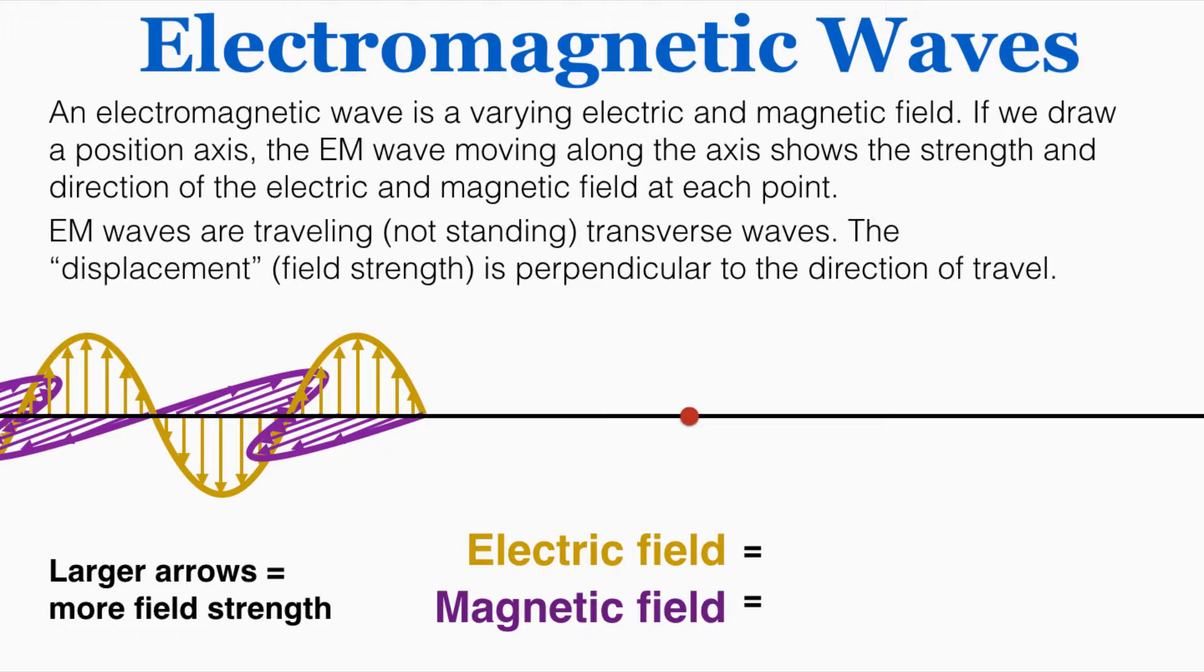There are certain points along this path where the electric field becomes very large in one direction, and the magnetic field becomes very large in one direction, and other places where the electric field and magnetic field are equal to zero. So this isn't actually a three-dimensional shape. This is a representation of the field strength along a one-dimensional line.